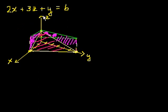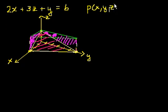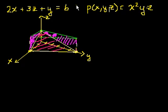Since we're doing a triple integral, instead of just computing a volume, let's compute the mass of something with variable density. The density function — it's a function of x, y, and z — let's say it's x squared times y times z. Our focus here is really just to set up the integrals.